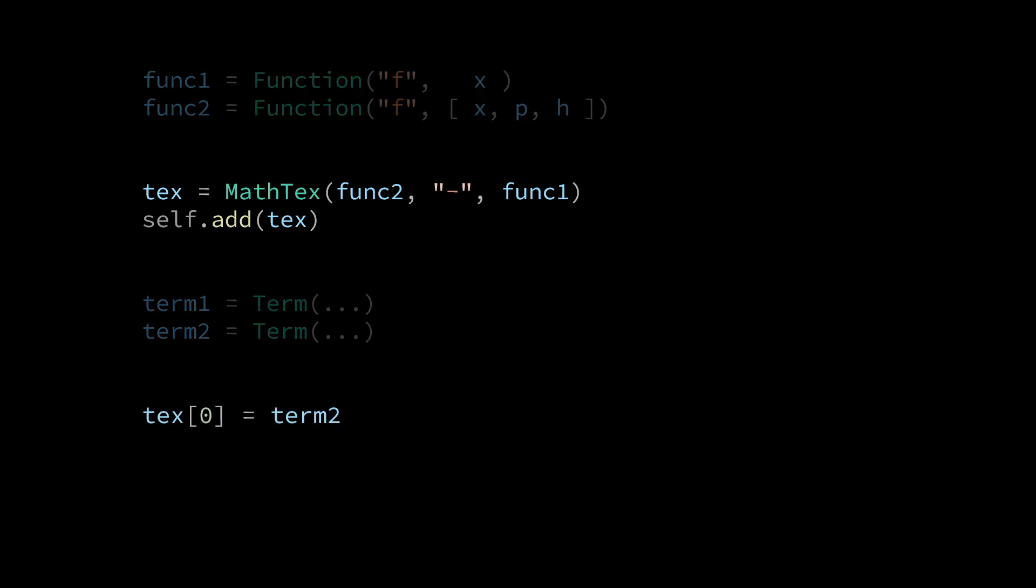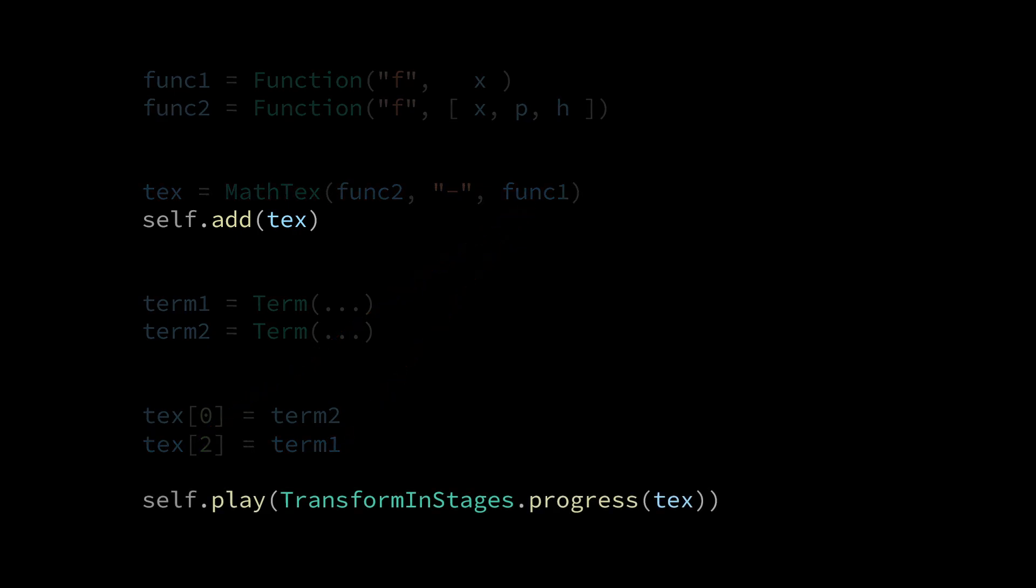Here we have text0 equals term2. Now text0 is a reference that points to func2, so here we are replacing func2 with term2. And here we have text2 equals term1 and this replaces func1 with term1. Finally, we animate the changes made to text using transform in stages dot progress text.